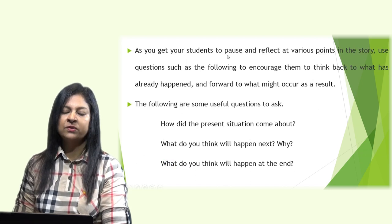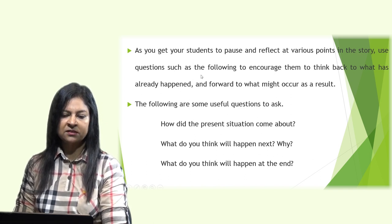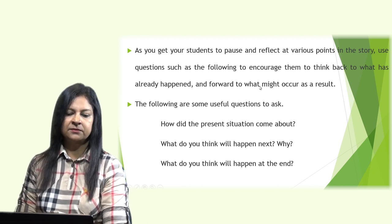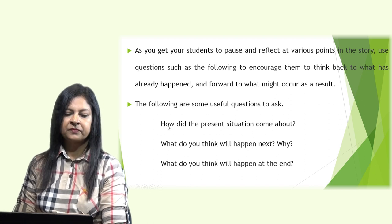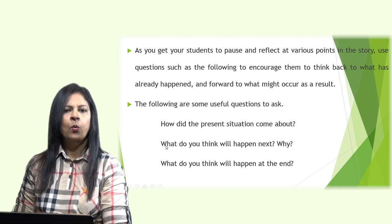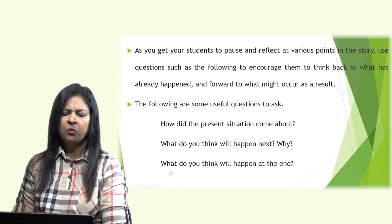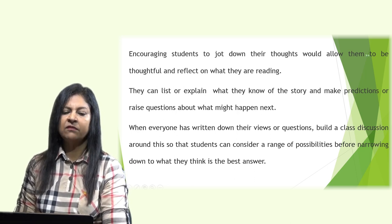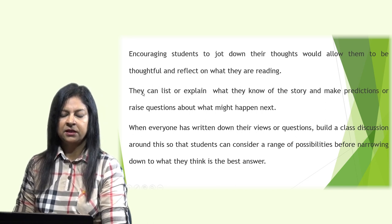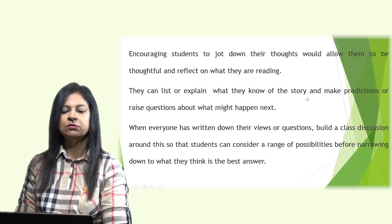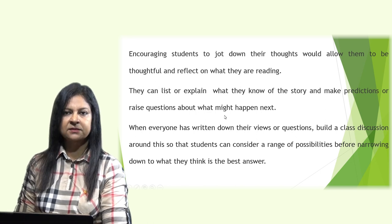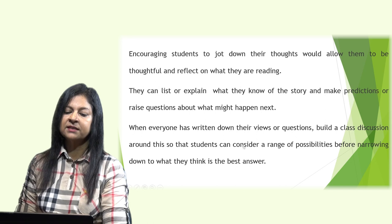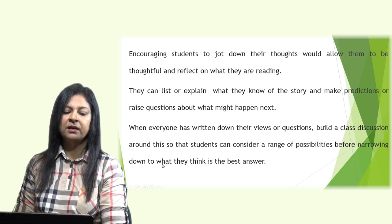As you get your students to pause and reflect at various points in the story, use questions such as the following to encourage them to think back to what has already happened and forward to what might occur as a result. The following are some useful questions to ask: How did the present situation come about? What do you think will happen next and why? What do you think will happen at the end? Encouraging students to jot down their thoughts allows them to be thoughtful and reflect on what they are reading. They can list or explain what they know of the story and make predictions or raise questions about what might happen next. When everyone has written down their views or questions, build a class discussion so that students can consider a range of possibilities before narrowing down to what they think is the best answer.